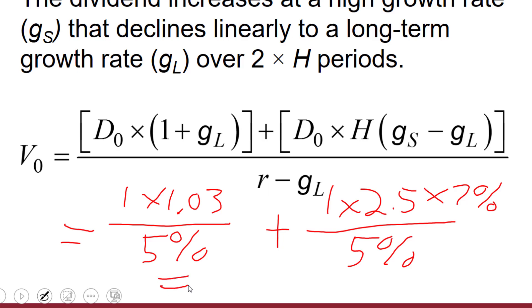And what we've got is two terms. The first term is going to be 20.6, and that second term is going to be 3.5. And the final answer, which is our intrinsic value, is 24.1.